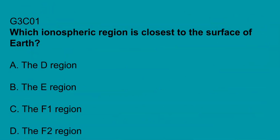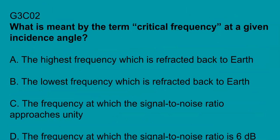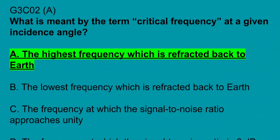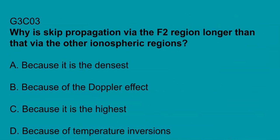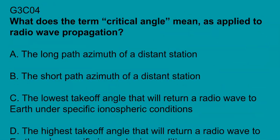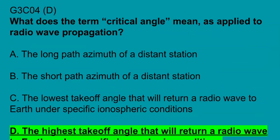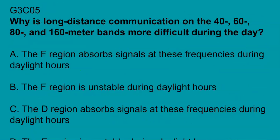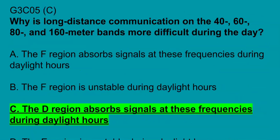G3C01: which ionospheric region is closest to the surface of the Earth? The D region. G3C02: what is meant by the term critical frequency at a given incidence angle? The highest frequency which is refracted back to Earth. G3C03: why is skip propagation via the F2 region longer than that via the other ionospheric regions? G3C04: why is long-distance communications on the 40, 60, 80, and 160 meter bands more difficult during the day? The D region absorbs signals at these frequencies during daylight hours.